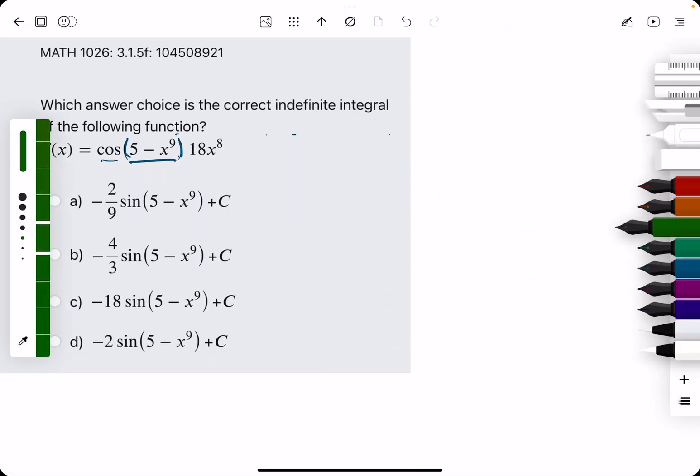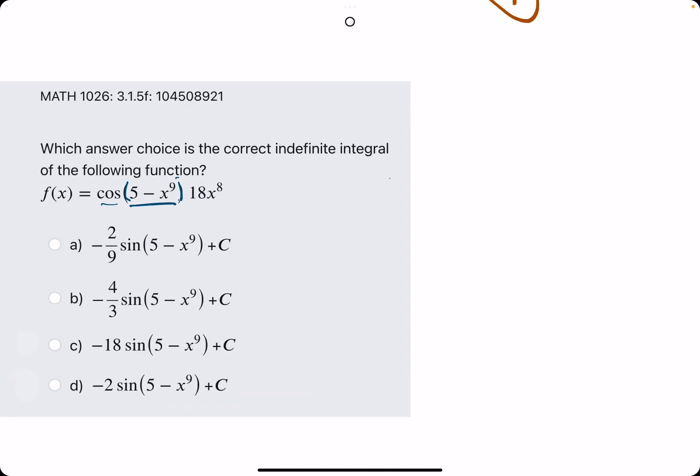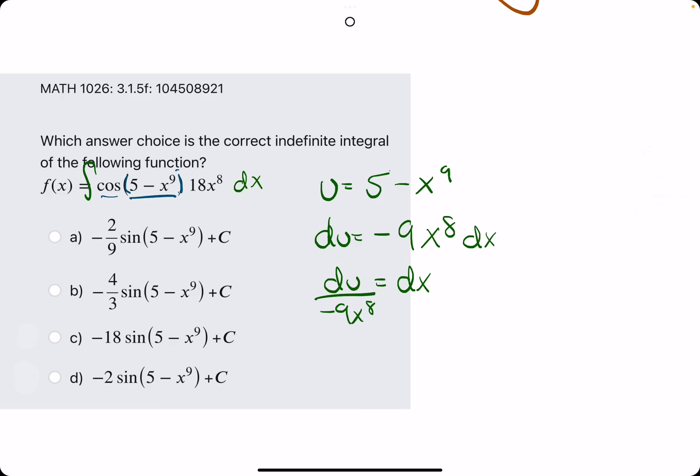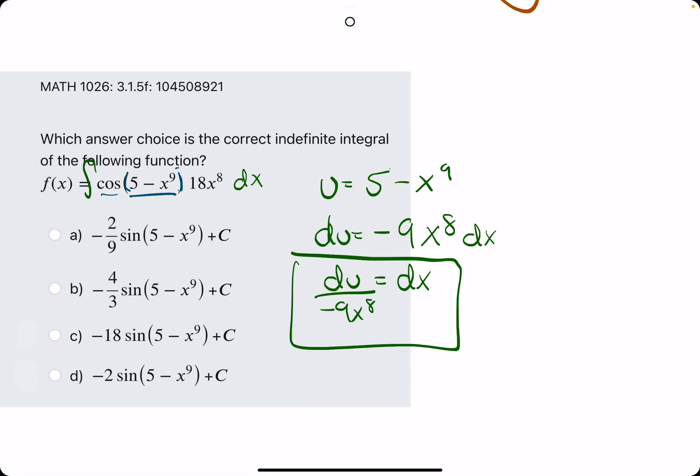Let's go ahead and do one more. We have the integral of cosine of that, times 18x to the 8th. So the inside, the u, is what's inside the cosine. And then du is the derivative of u: 5 goes to 0, negative x to the 9th is negative 9x to the 8th. Tack on dx. If we solve for dx, we get du over negative 9x to the 8th.